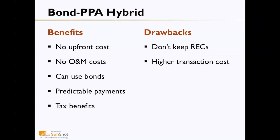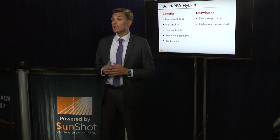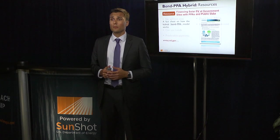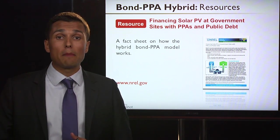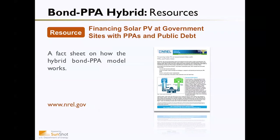Reviewing the benefits of this bond PPA hybrid structure: there's no upfront cost to the customer, no operations and maintenance costs, they can actually use bonds under this structure, the payments are predictable, and they can take advantage of the tax benefits. The drawbacks are that they still don't get to keep the renewable energy credits, and because of the complexity of the structure, there are generally higher transaction costs. This structure was pioneered by Morris County in New Jersey, and the National Renewable Energy Laboratory has created a fact sheet explaining how this structure worked, including case studies on PPA prices and return on investment. You can check it out at NREL.gov.